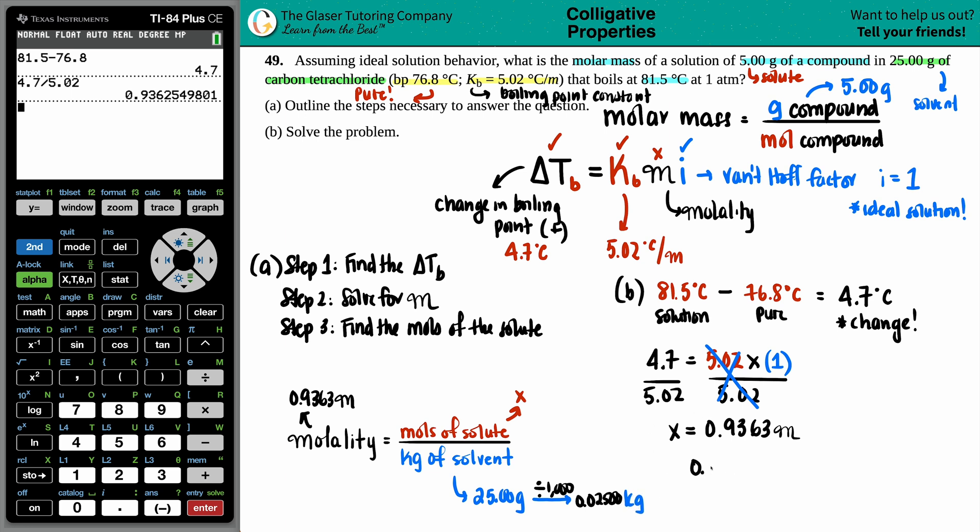Now let's solve. My molality is 0.9363 equals X over 0.02500. Cross multiply—the molality times the kilograms gets me the moles. I'll take this whole number times 0.025, and I get 0.0234 moles. That's the moles of the compound, and that's the moles we have.